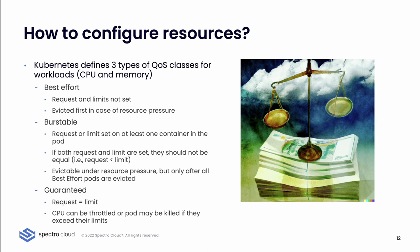Kubernetes defines three types of Quality of Service classes for your workloads, for both CPU and memory — where you set limits and requests. Those three classes are: Best Effort, where pods will be evicted first in case of resource pressure; Burstable, which are evictable under resource pressure but only after all Best Effort pods are evicted; and Guaranteed, meaning those pods are less likely to be killed if they exceed their limits. For Best Effort, requests and limits are not set at all — this is the default in Kubernetes, so all pods are treated the same from a QoS class perspective.